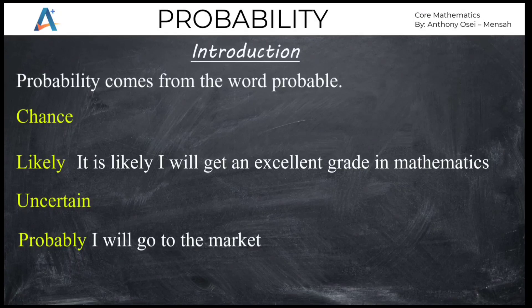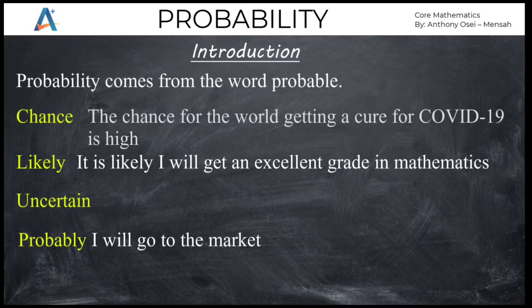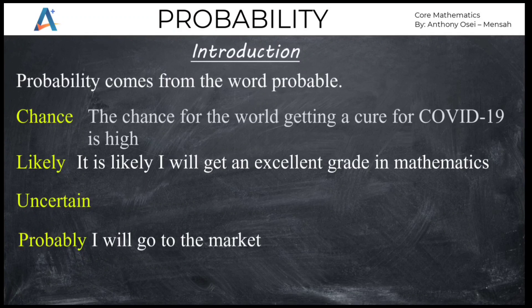Another example: 'the chance of the world getting a cure for COVID-19 is high.' We use the word chance because it is not certain — we can get a cure and we can also not get a cure. This degree of uncertainty can be measured with the help of probability. If you have a sentence with uncertainty in it, we need a value to represent that uncertainty, and that is when probability as a topic in mathematics comes in.